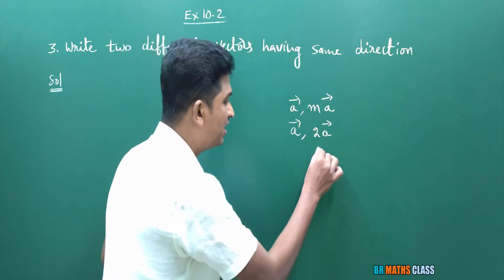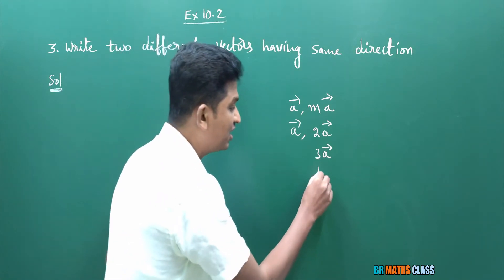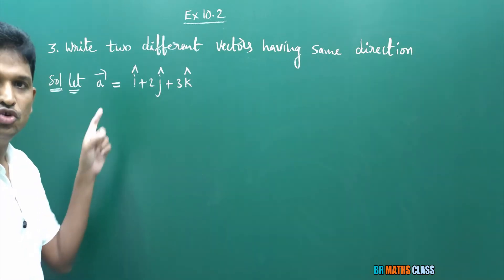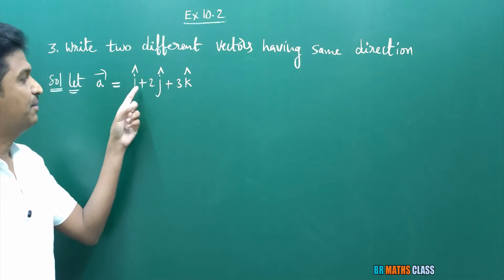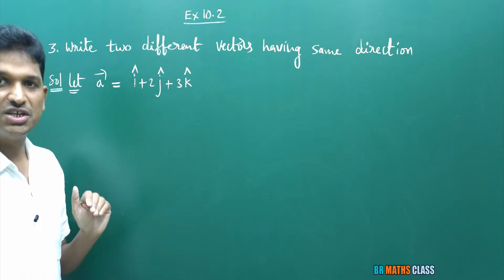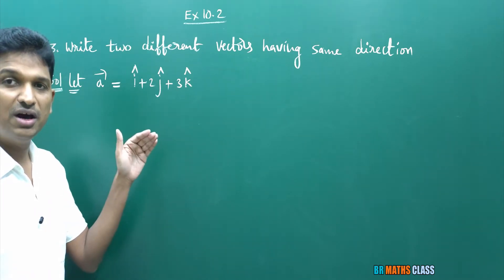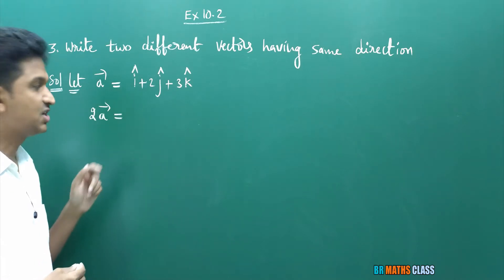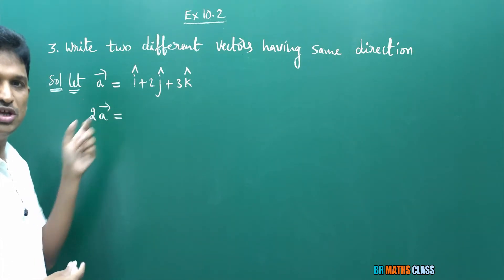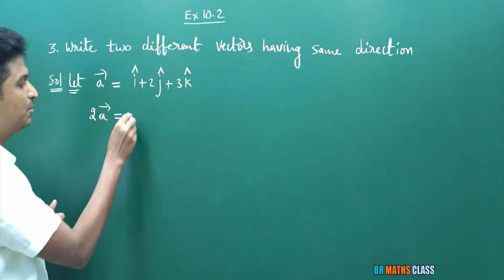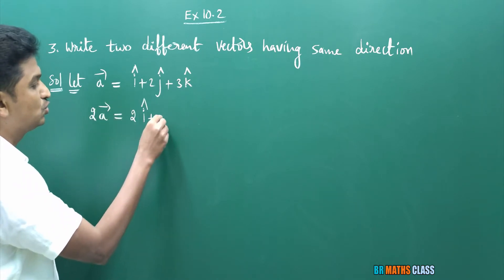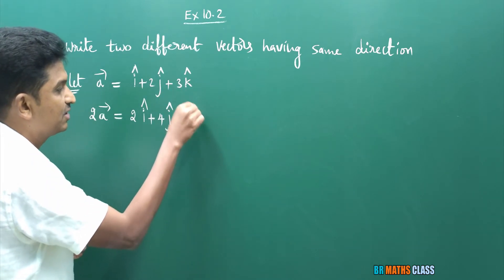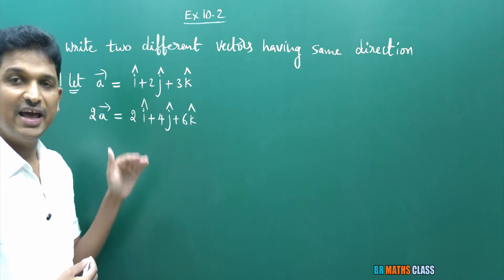Not only these — a bar and 3·a bar, or a bar and (1/2)·a bar are also in the same direction. We can give infinitely many examples. Consider a bar = i cap + 2j cap + 3k cap. Then 2·a bar = 2i cap + 4j cap + 6k cap, obtained by multiplying the complete vector by scalar 2.